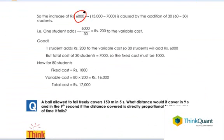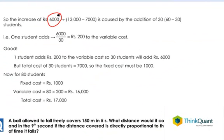So in effect we can say that this increase of 6,000 in the total cost, that is from 7,000 to 13,000, is caused by the addition of 30 students. That means one student adds 6,000 by 30, that is Rs. 200, to the variable cost.